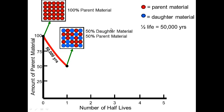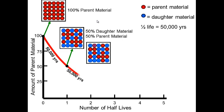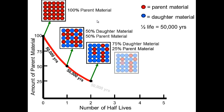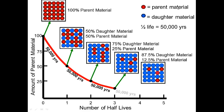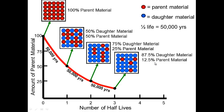After another 50,000 years — two half-lives, 100,000 years total — you have 75 percent daughter material and 25 percent parent material. After another 50,000 years — three half-lives, 150,000 years total — you have 87.5 percent daughter material and 12.5 percent parent material. One half-life, two half-lives, three half-lives — this is how much daughter and parent material remains.